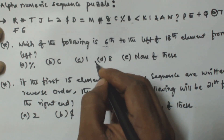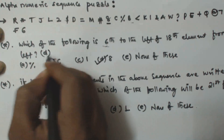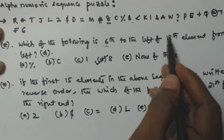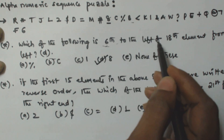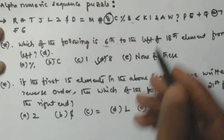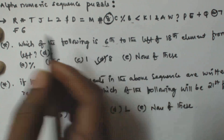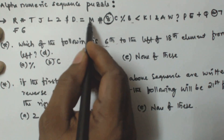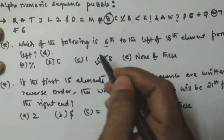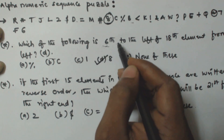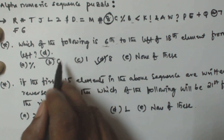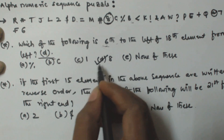The 12th element is 8, so the answer for the first question is option D, which is 8. We can also verify by counting the 18th from the left: 1 2 3 4 5 6 7 8 9 10 11 12 13 14 15 16 17 18 — that is 1. Then moving 6 positions to the left: 1 2 3 4 5 6 — that gives us 8. So option D is correct.